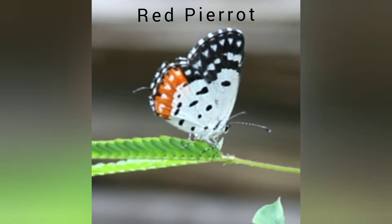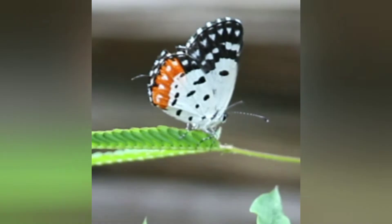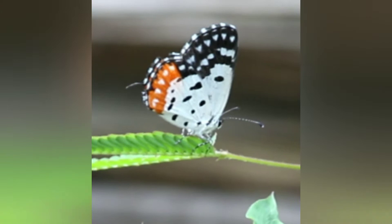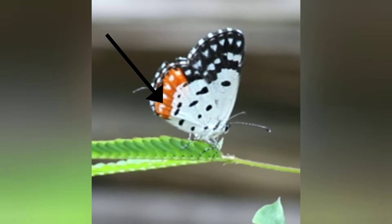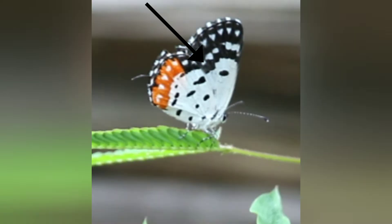Next one is the Red Pirate. The scientific name of this butterfly is Talicada nyseus. Red Pirate also has a tail at its hind wing, with a wingspan of 30 to 36 millimeters. The underside is mainly white with black spots. The underside of the hind wing has an orange-red marginal band followed by black, both with white spots, which is a unique character of this butterfly.